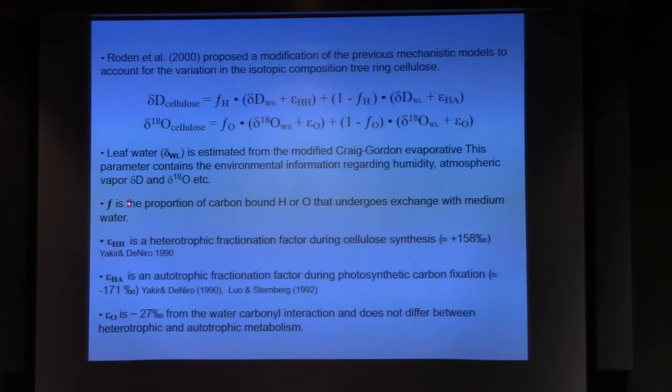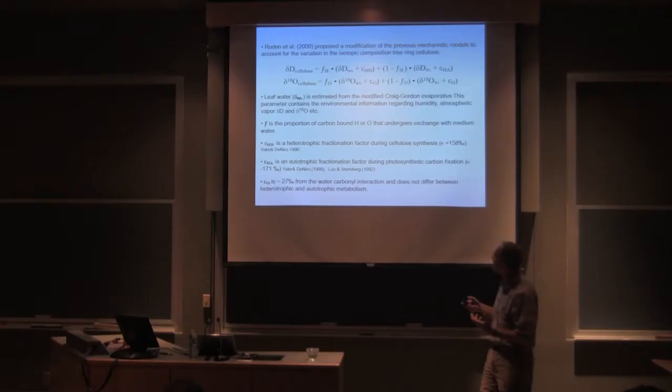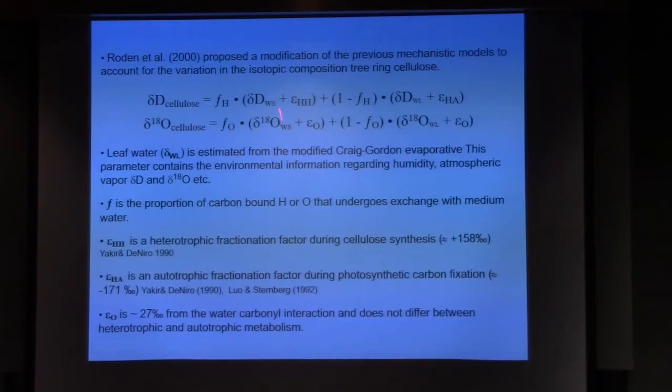The source water and this F value is the proportion of carbon-bound hydrogen oxygen that undergoes exchange when you make cellulose, how much of that is going to exchange. And where they're exchanging at is the source water or the stem water.